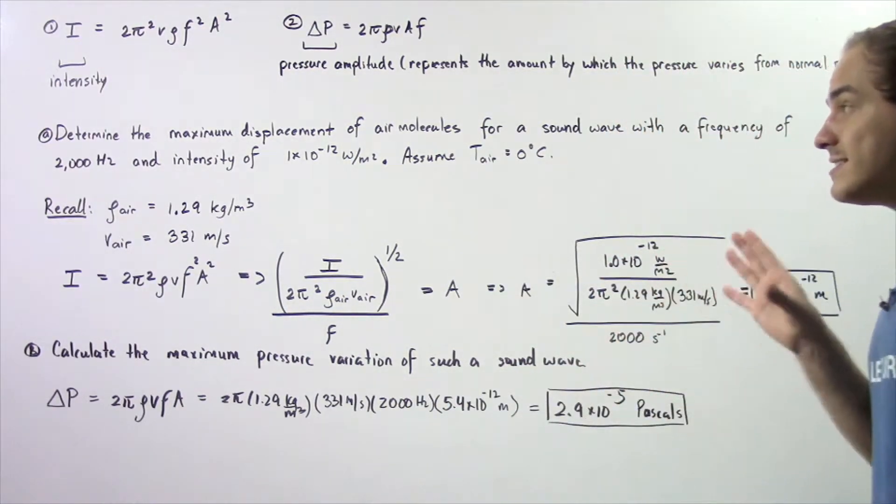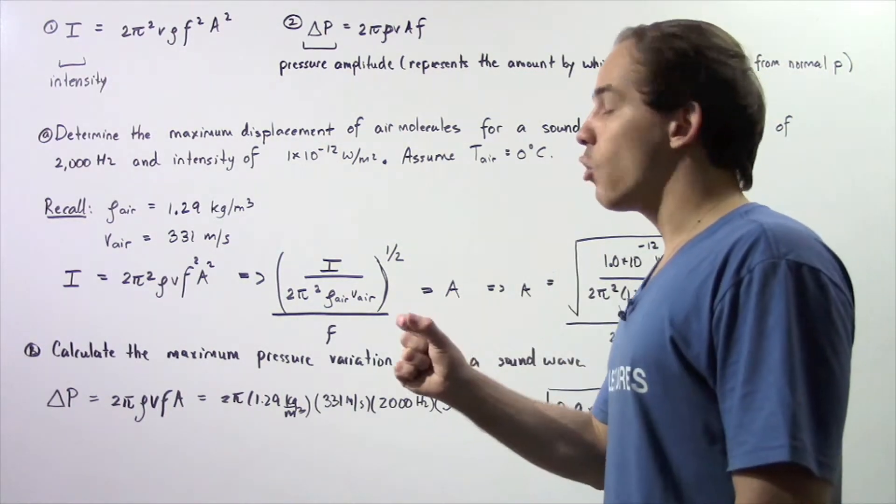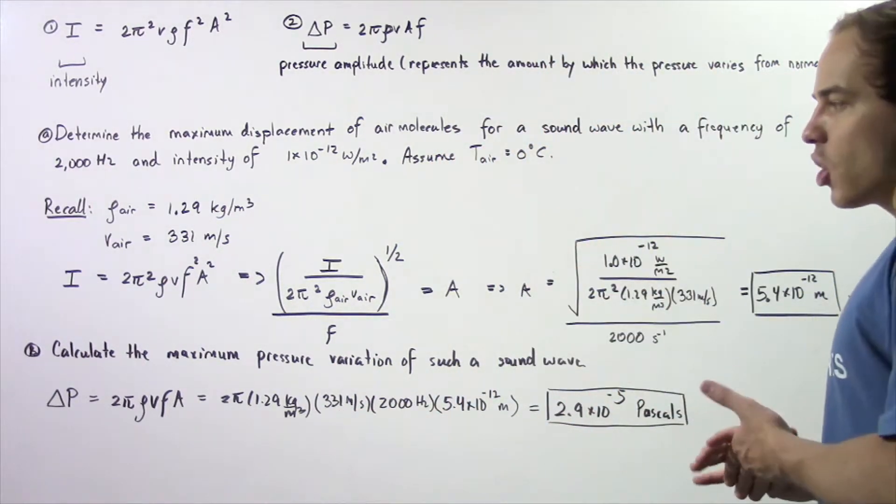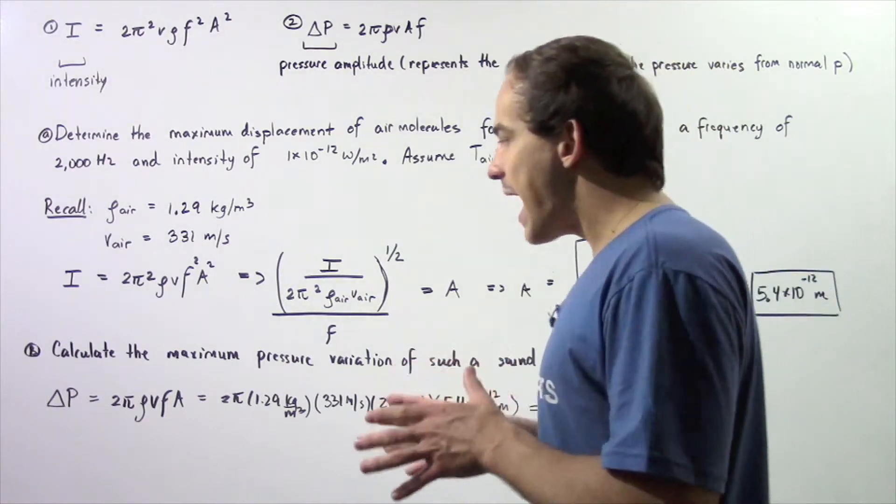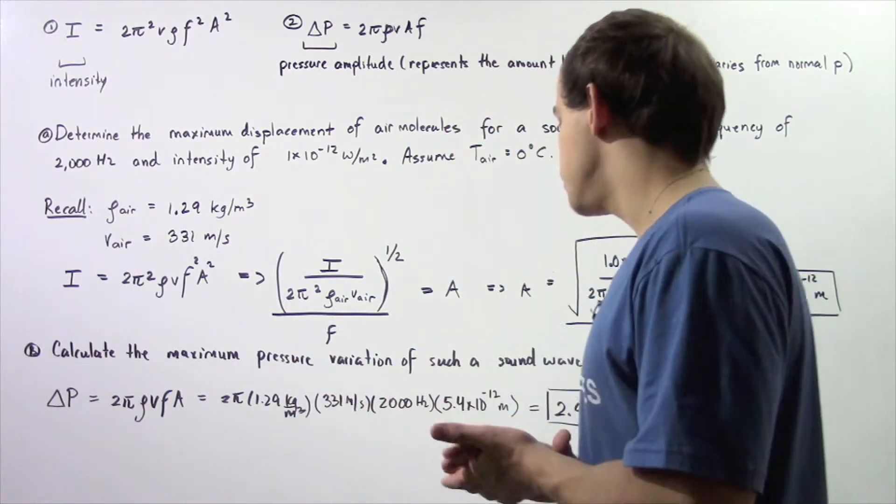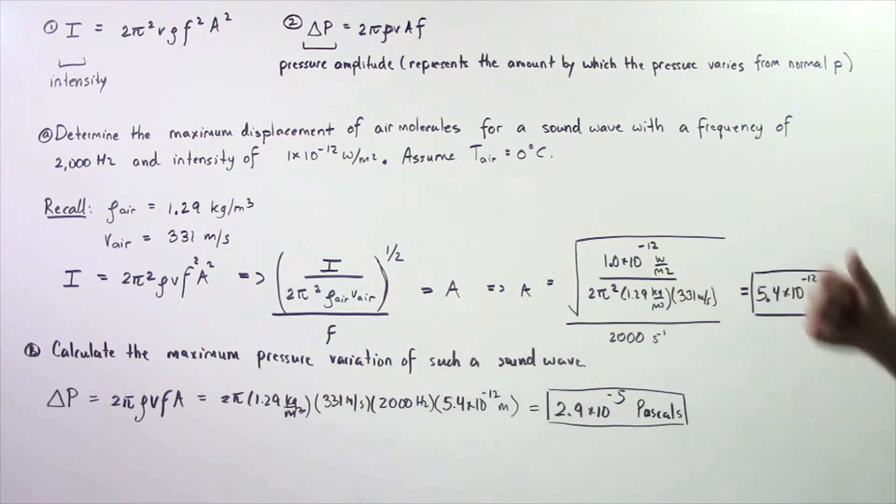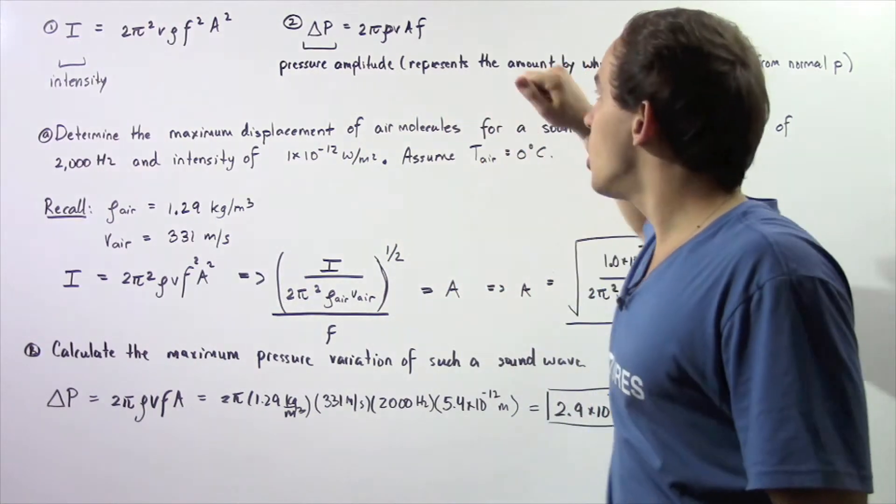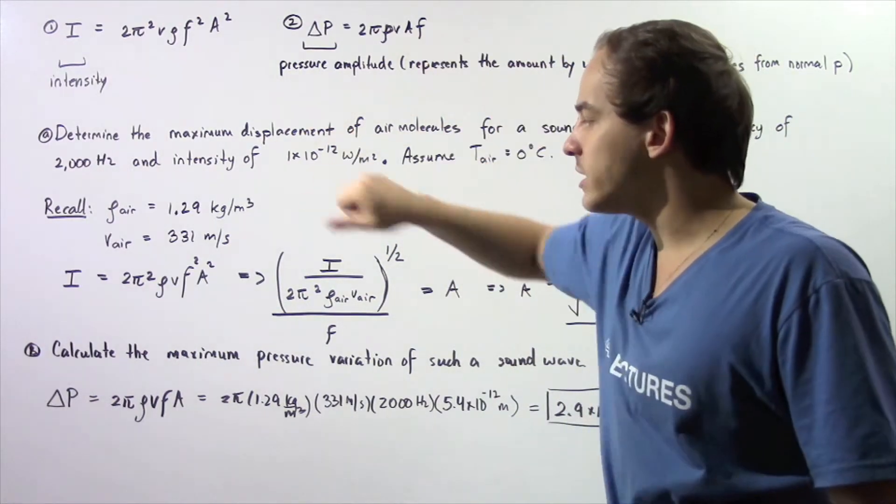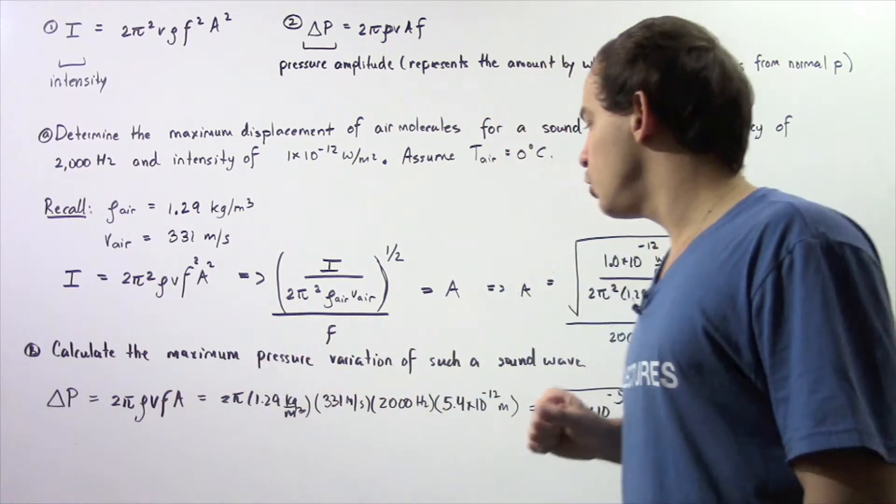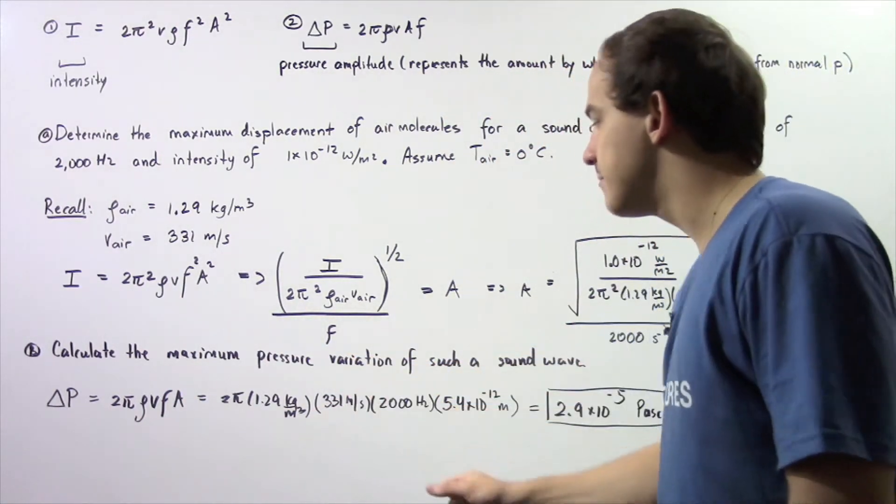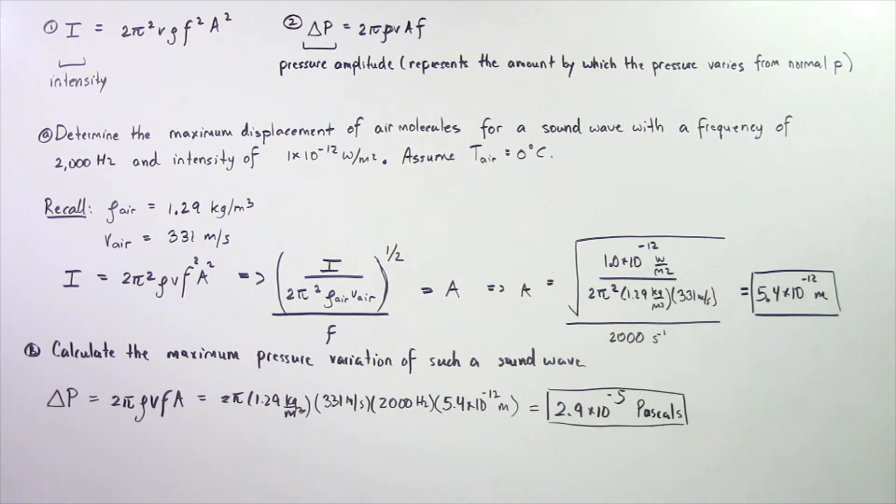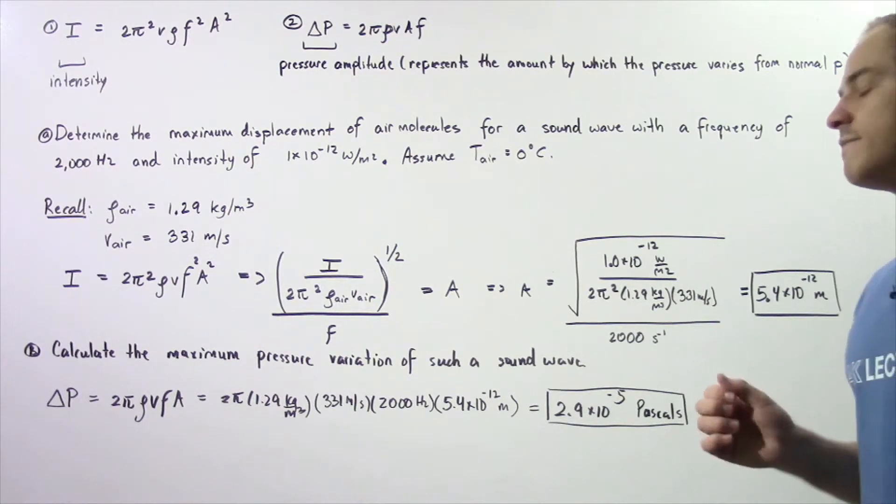Our human ear can detect very small distances or very small amplitudes of oscillation. Let's look at part B. Calculate the maximum pressure variation of such a sound wave as described in part A. We want to use equation number two. We know what the amplitude is from part A, so we can plug in our values and get 2π times the density times the velocity times the frequency times our amplitude. We get a value of 2.9×10⁻⁵ pascals.